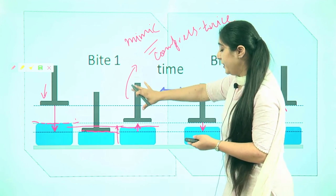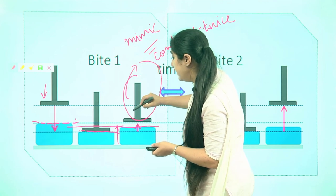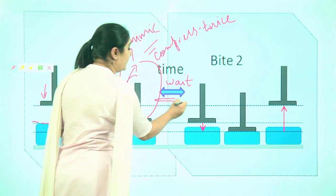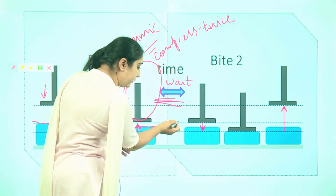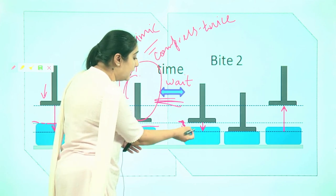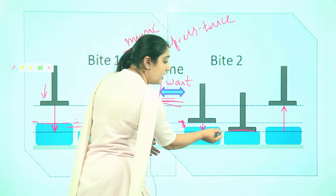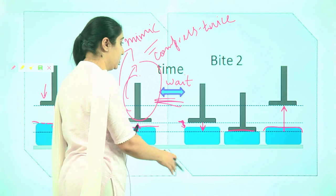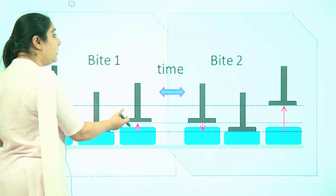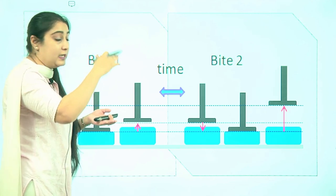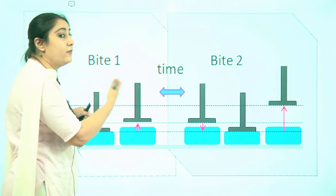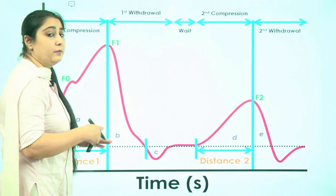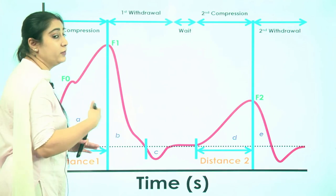After the first compression, the probe is removed and a waiting time is given. Then a second compression is applied. The original height has already been reduced somewhat, so when the second compression is applied, the food compresses again and bounces back to a certain height which may not be the same as before. We can call it compression one, compression two — or bite one, bite two.